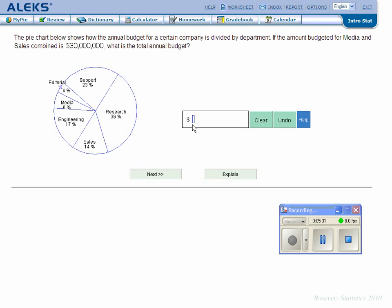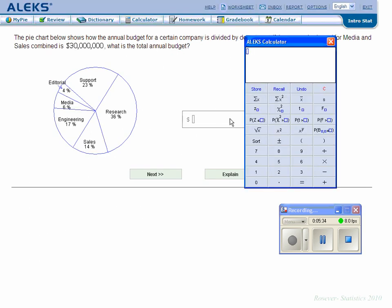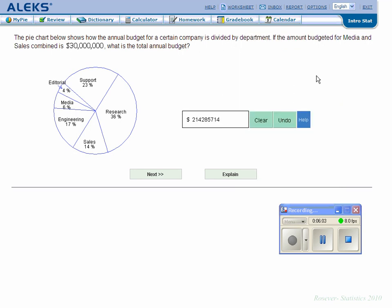30 million divided by 0.14, enter. There we go, that's the answer: 214,285,714 was the total annual budget. Let me just close this. Oh no, for media and sales combined, I forgot media.